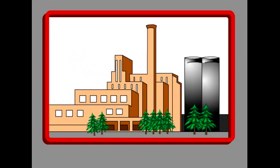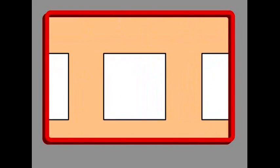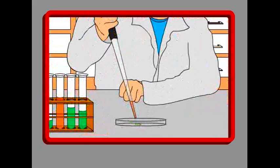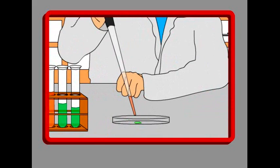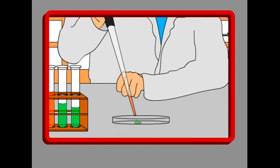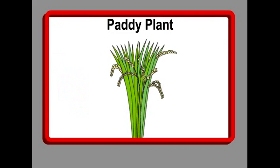Agribusiness corporations and research institutions have begun making new varieties of rice in laboratories. They call these genetically modified or genetically engineered rice — let's call it GE rice. GE rice looks the same as native rice, but it is very different. To understand how GE rice is made, we first have to understand how genetic engineering is done.